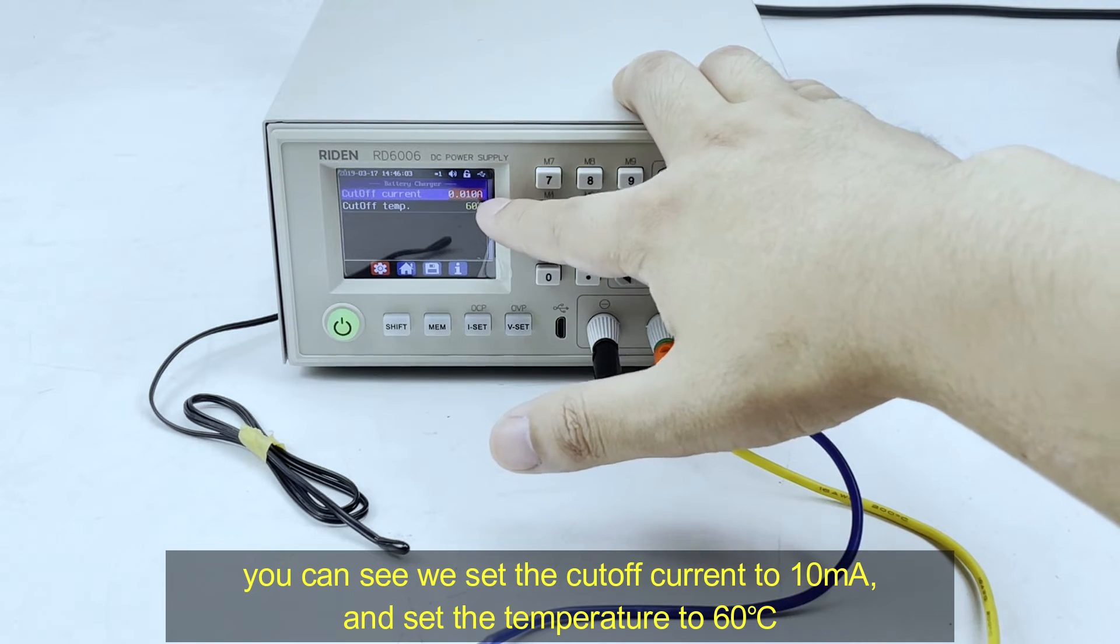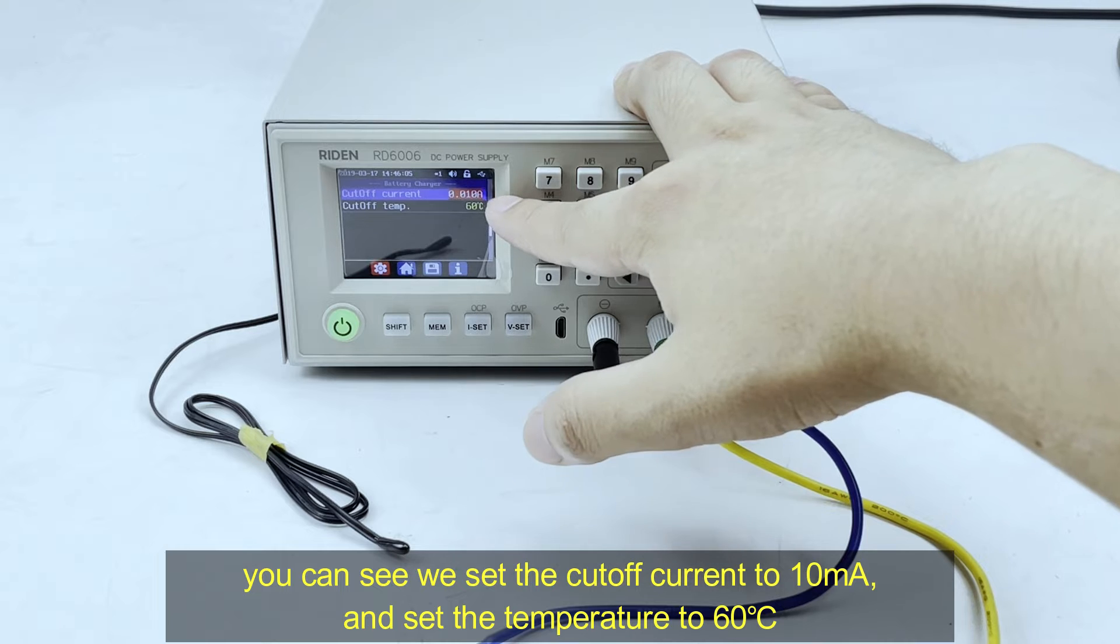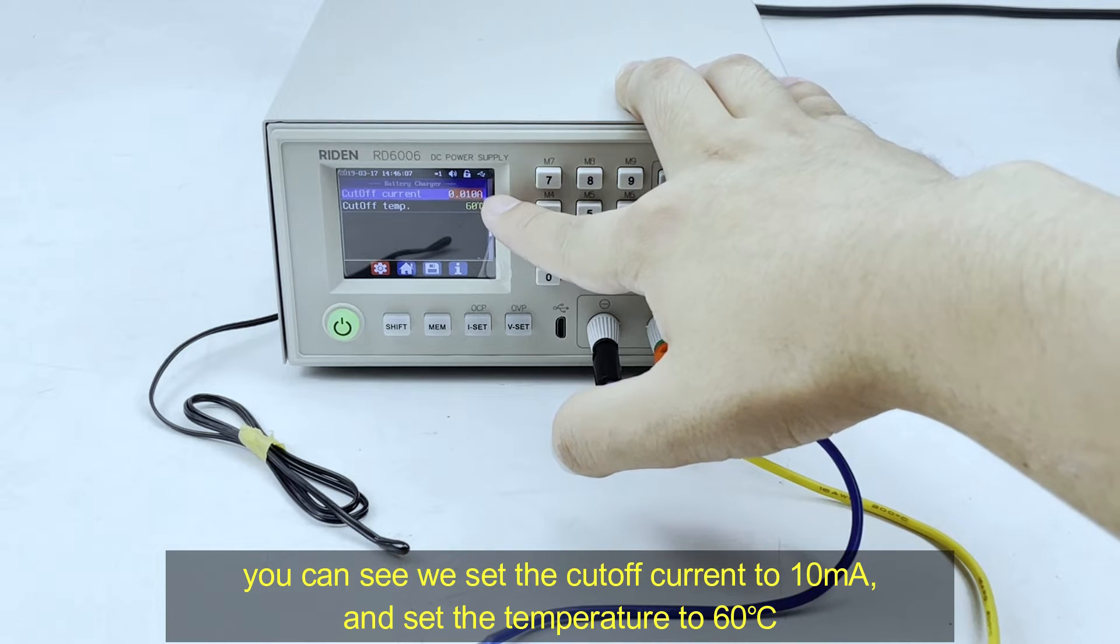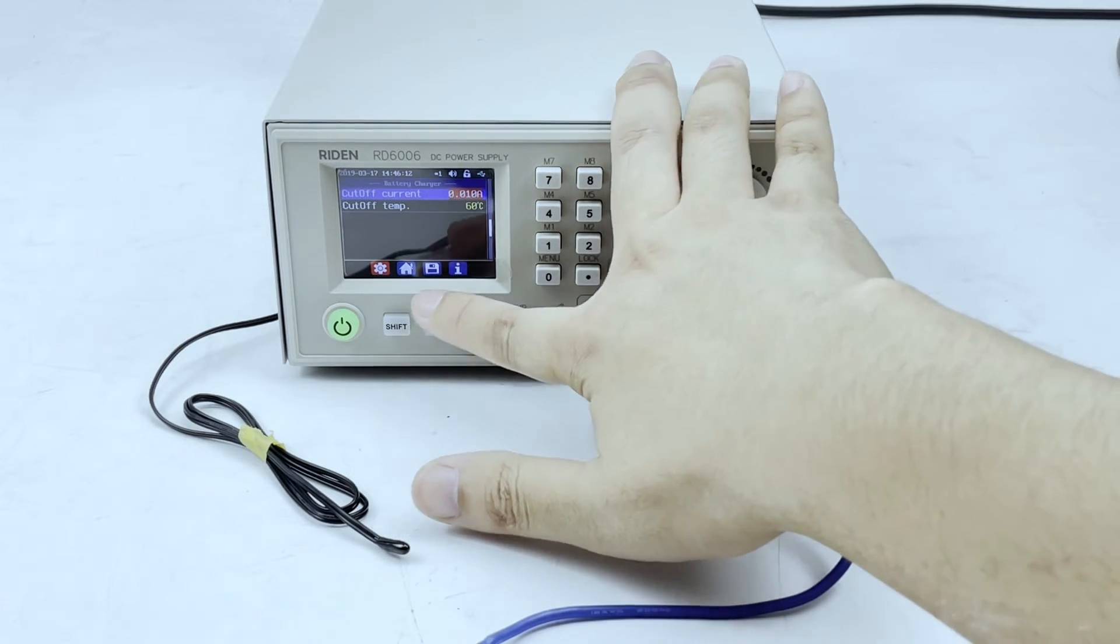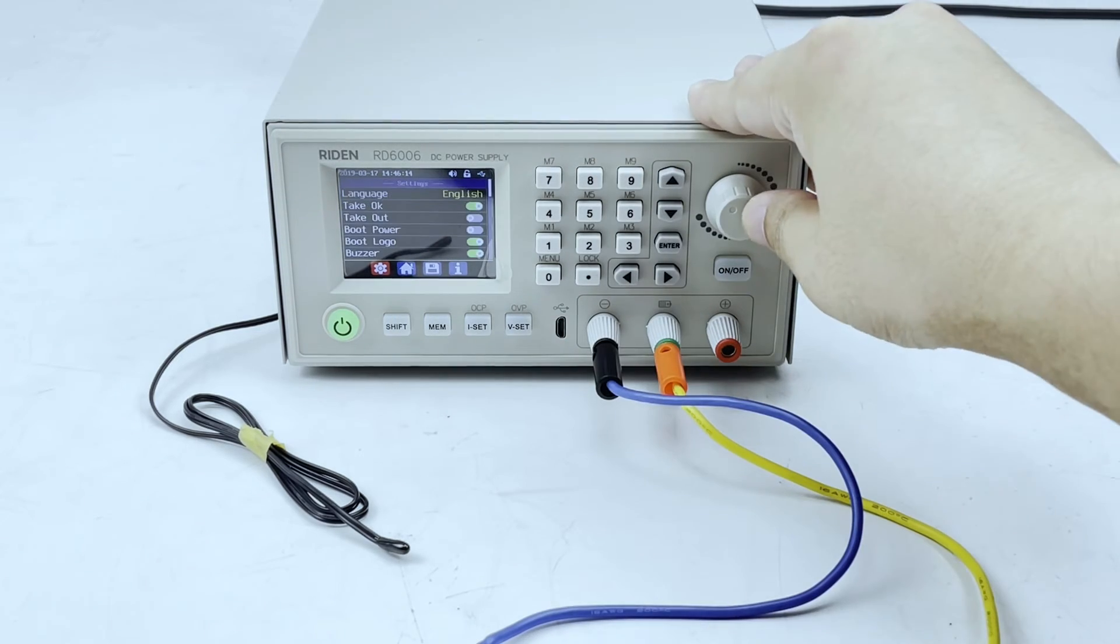Now, you can see we set the cutoff current to 10mA and the cutoff temperature is 60 degrees. Okay, now we return.